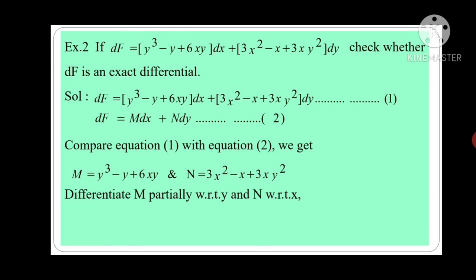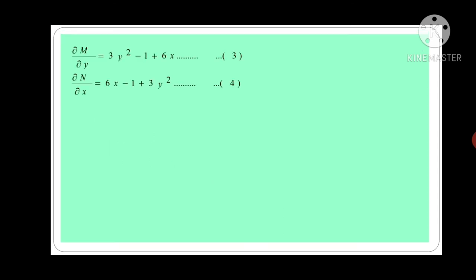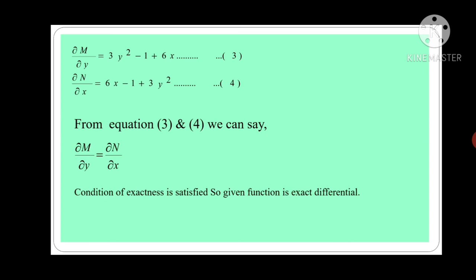Now differentiate M partially with respect to y and N with respect to x. We get del M by del y is equal to 3y² minus 1 plus 6x — equation 3. And del N by del x is equal to 6x minus 1 plus 3y² — equation 4. From equation 3 and 4 we can say del M by del y is equal to del N by del x. The condition of exactness is satisfied. So the given function is exact differential.